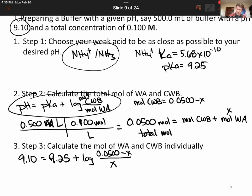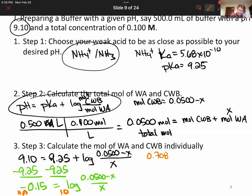So now, similar to what we did on the last slide, let's subtract 9.25 from both sides. We end up with minus 0.15 equals log of 0.0500 minus x over x. And then we can 10 to both sides. Then we can do 10 to the minus 0.15, I get 0.708. And 10 to the and log cancel each other, which leaves me with that equal to 0.0500 minus x over x.